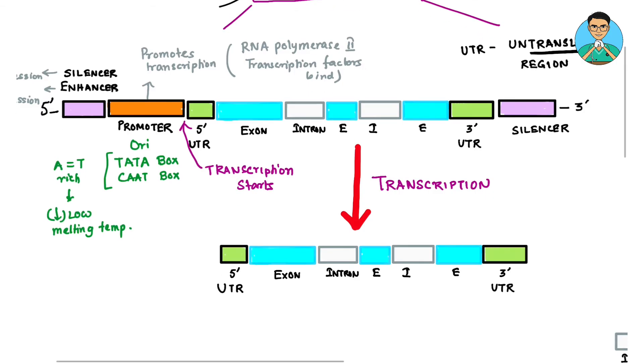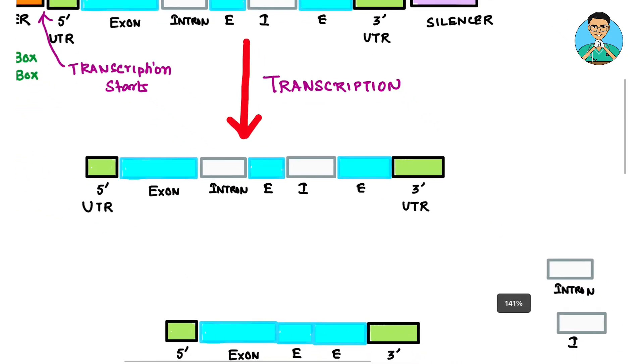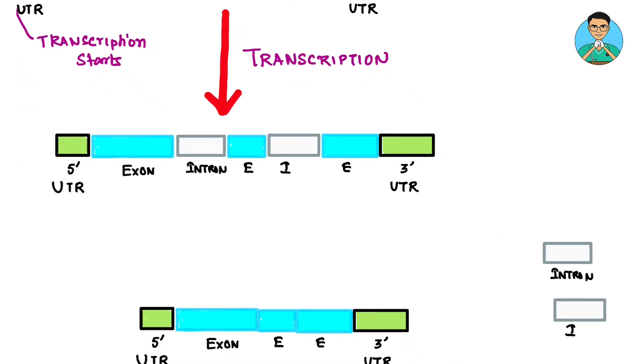After transcription what happens? We don't get the silencer, enhancers or promoters. We just get the untranslated regions and the exons and introns. This is known as the pre-mRNA. Sometimes this is also called a heteronuclear RNA.